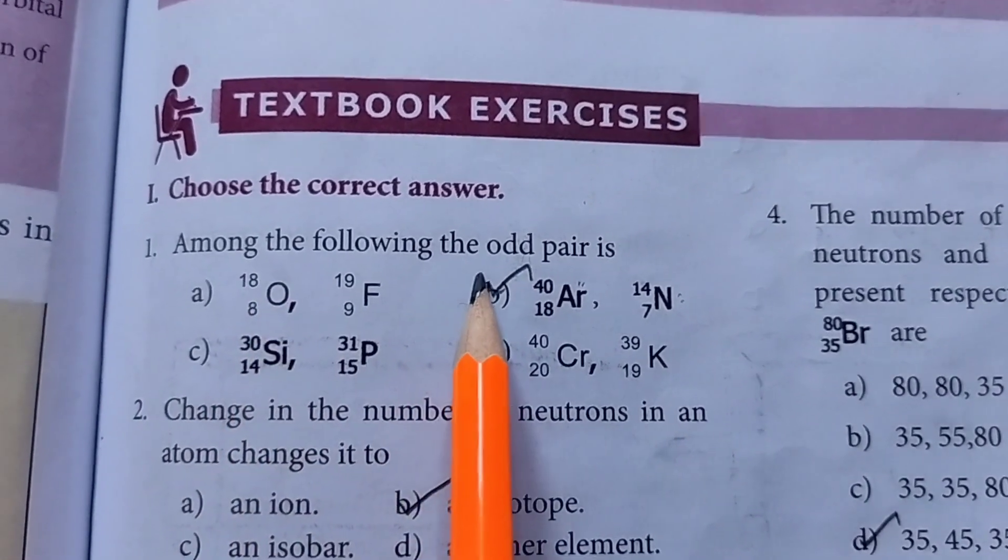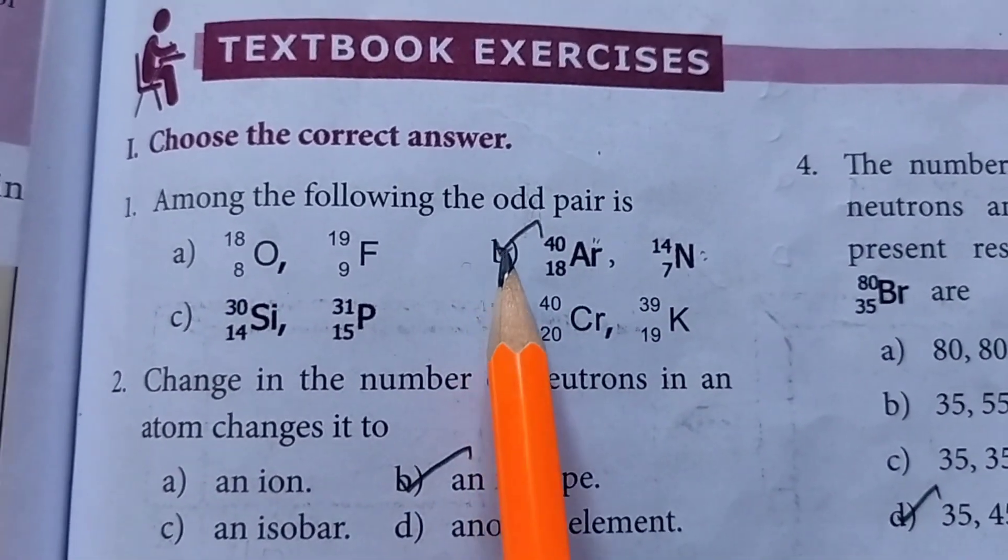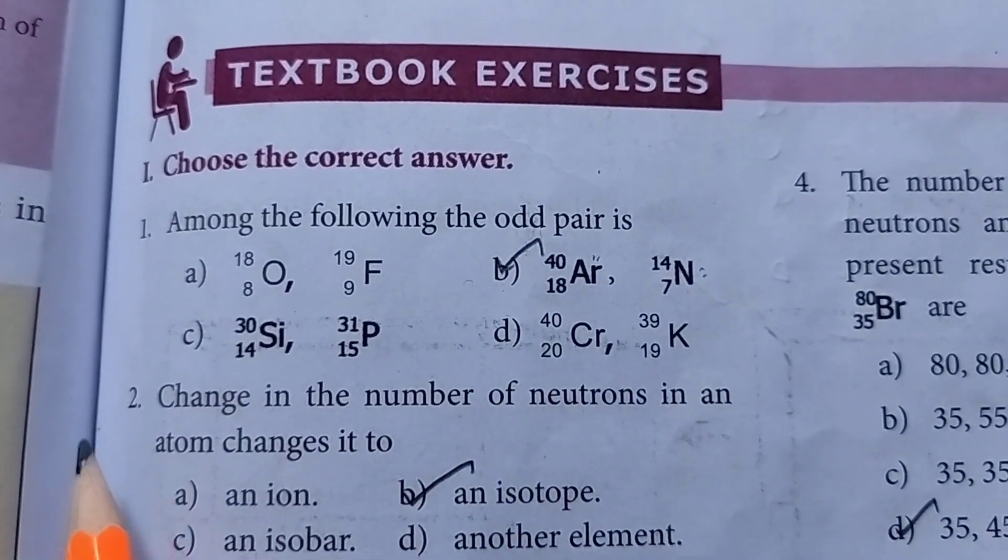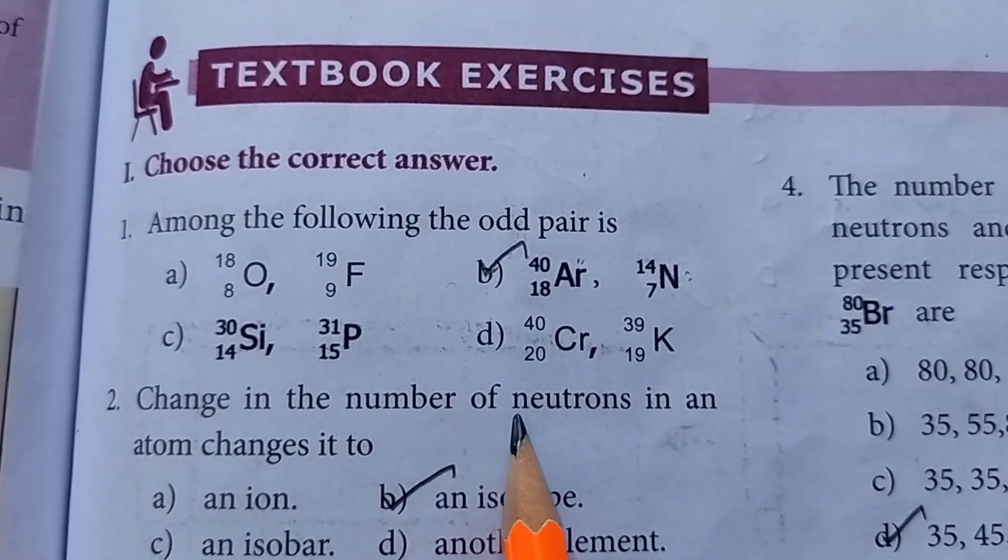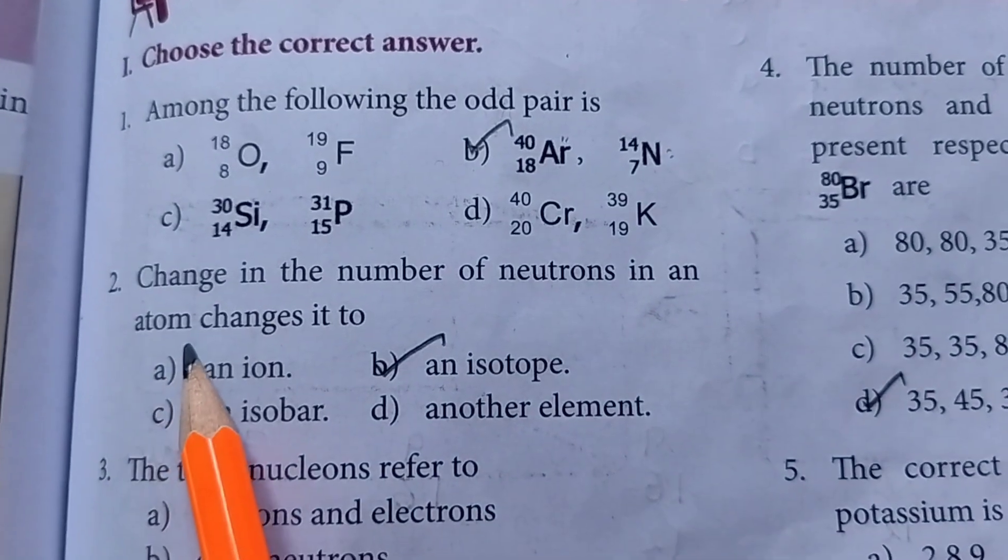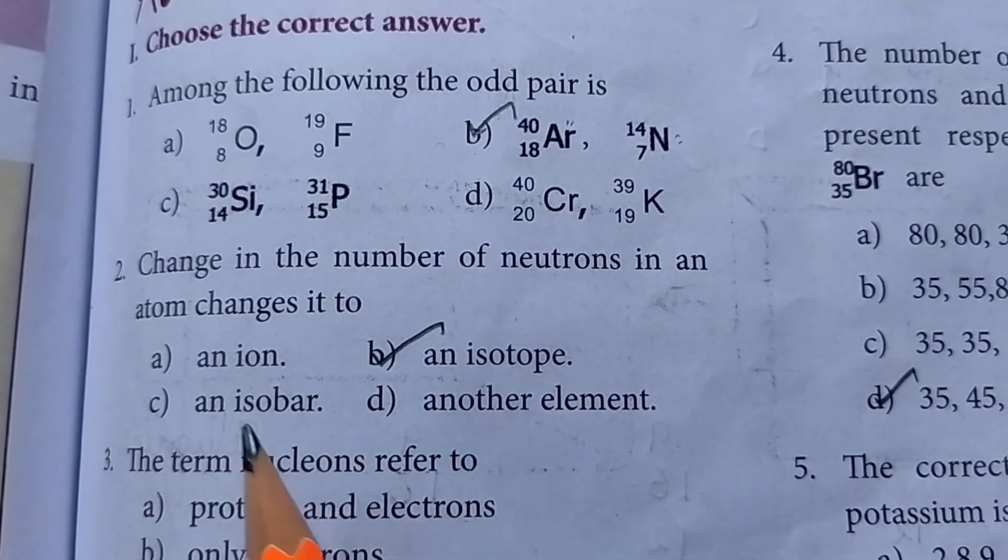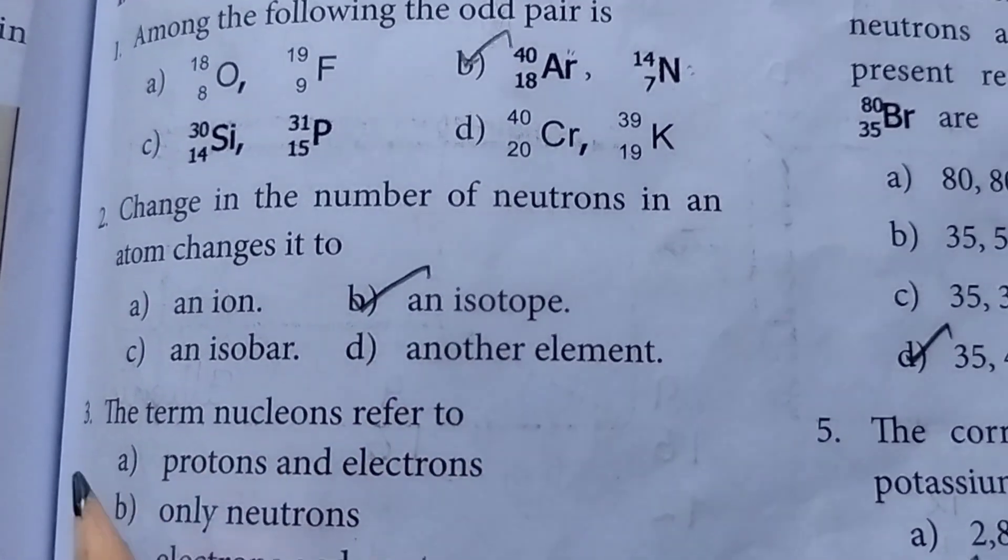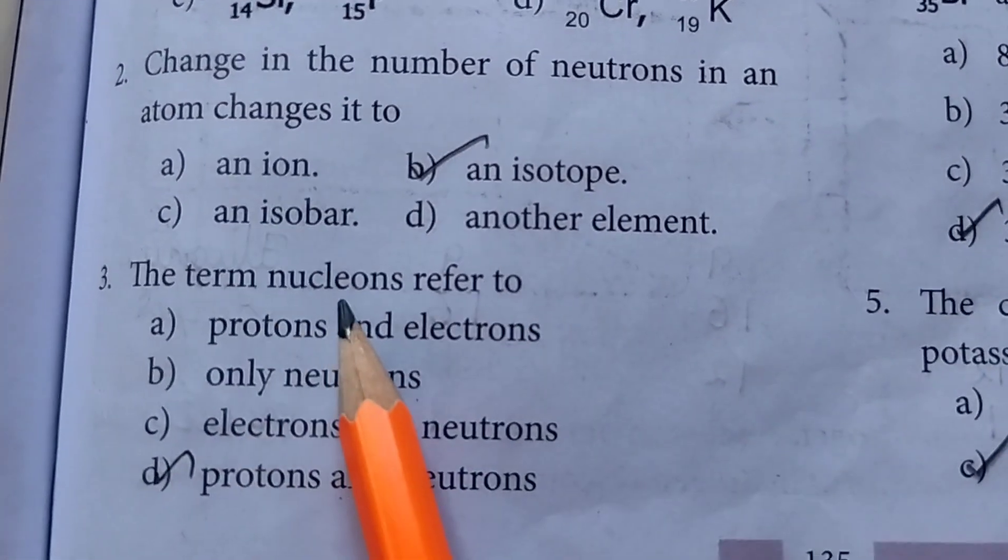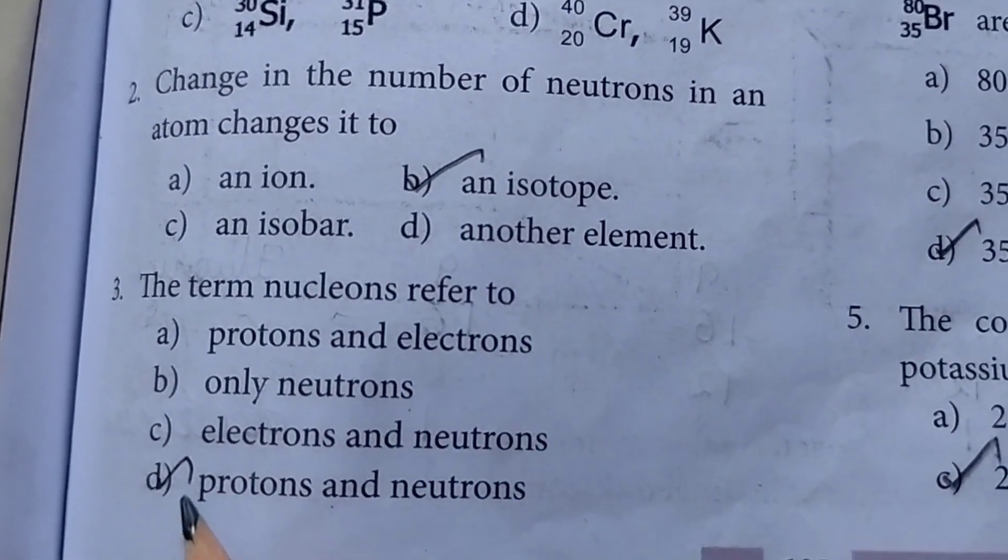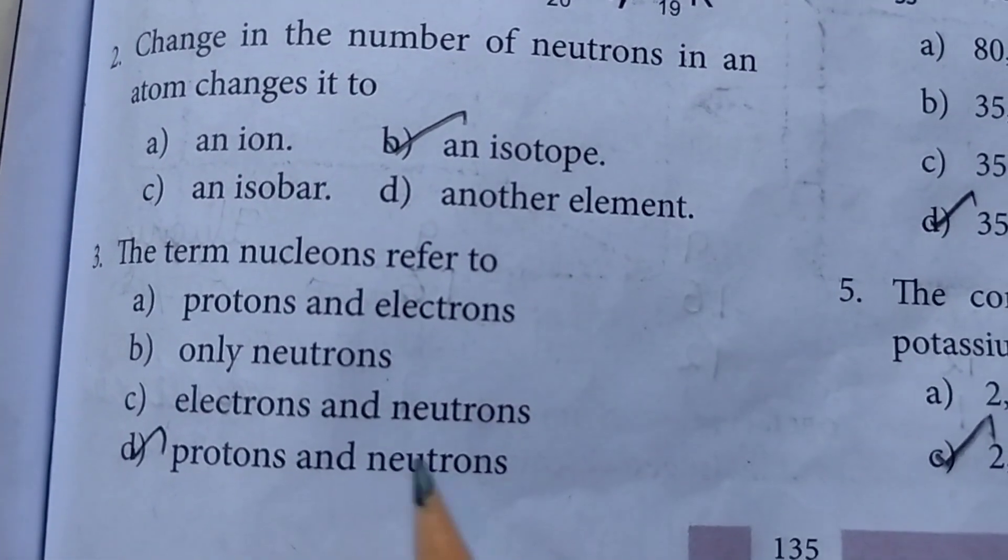First one among the following the odd pair is option B is the answer. Then second one change in the number of neutrons in an atom changes it to option B an isotope. Third one the term nucleons refer to option D answer protons and neutrons.